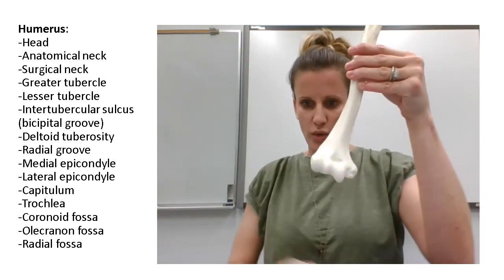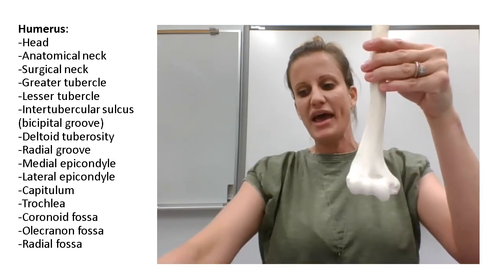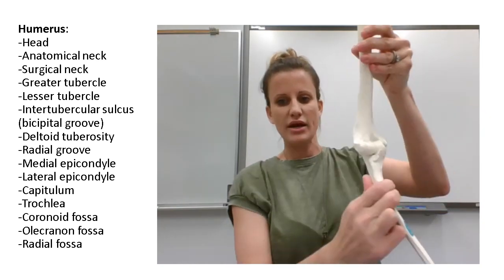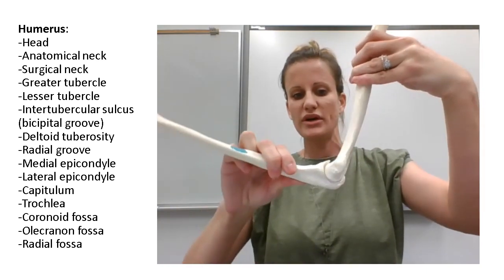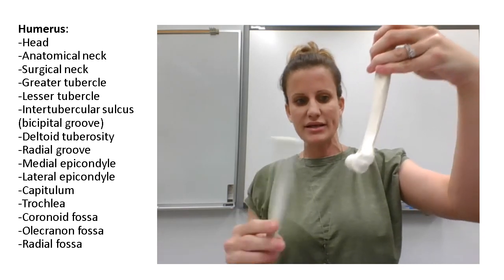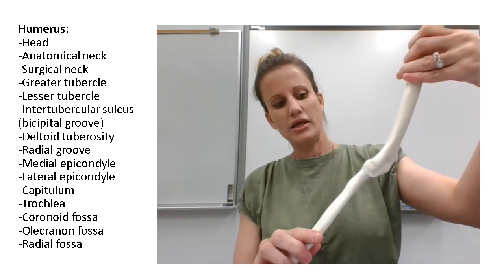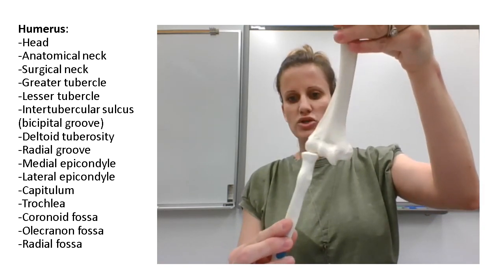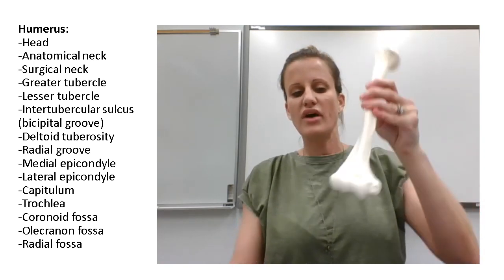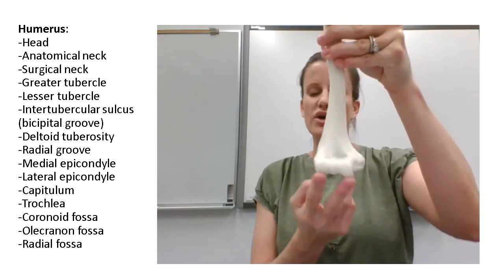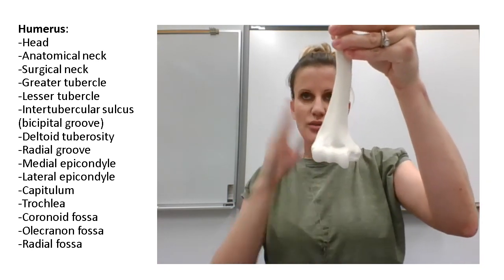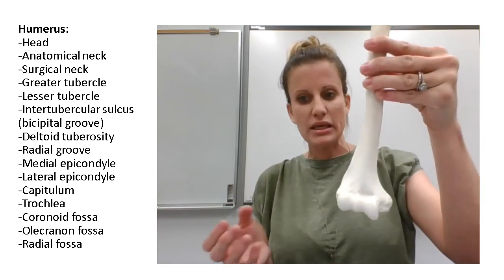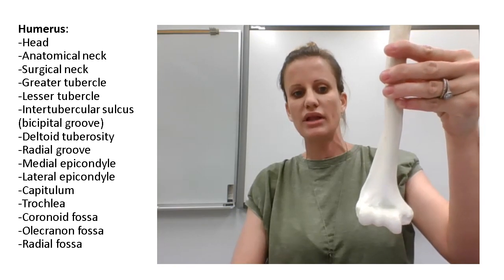This is where the elbow joint is formed. We're going to have the ulna sit here and form a joint with the humerus, and we're also going to have the radius sit laterally and form a joint with the humerus. We have a medial epicondyle and a lateral epicondyle — the little protrusions on either side of the elbow.